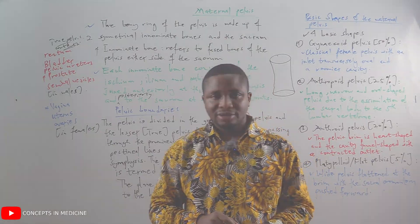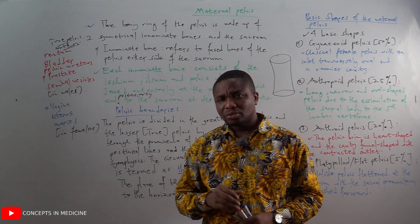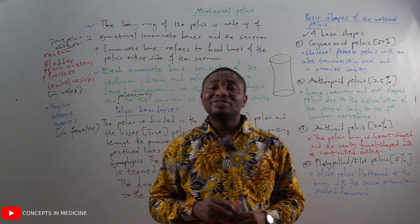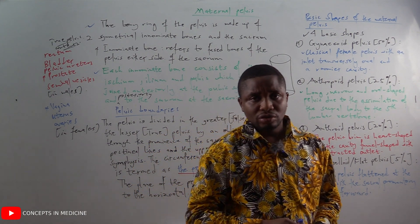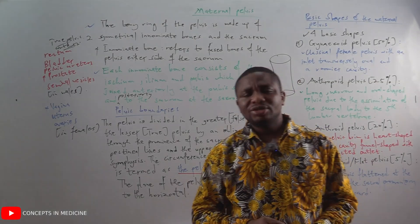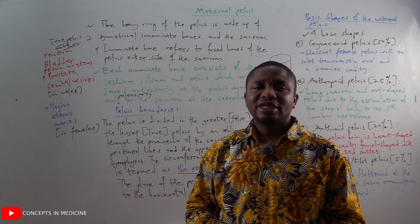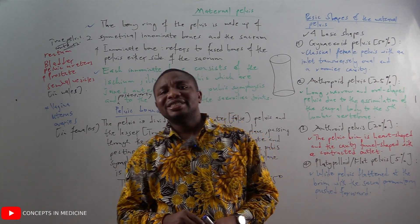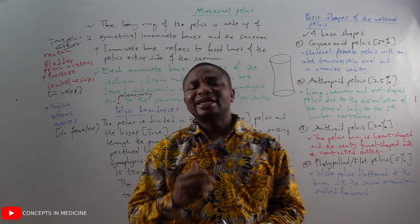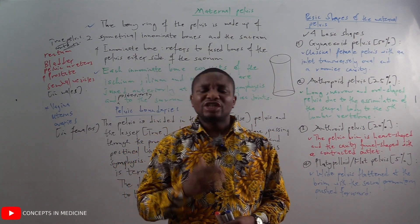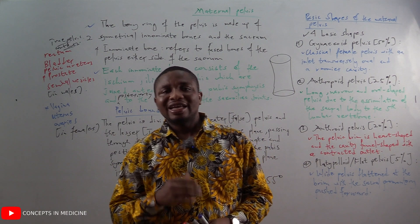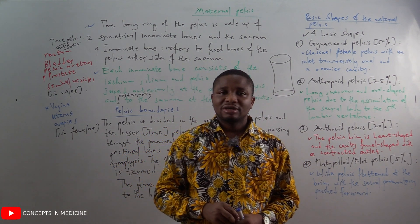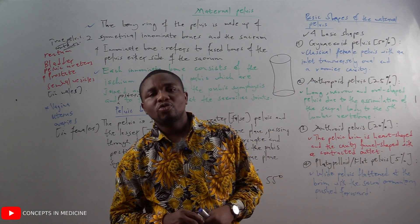The plane of the pelvis is at an angle of 55 degrees to the horizontal. There are four basic shapes of the maternal pelvis: the gynecoid pelvis, the anthropoid pelvis, the android pelvis, and the platypelloid pelvis.